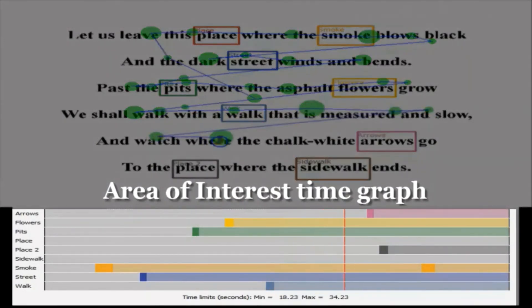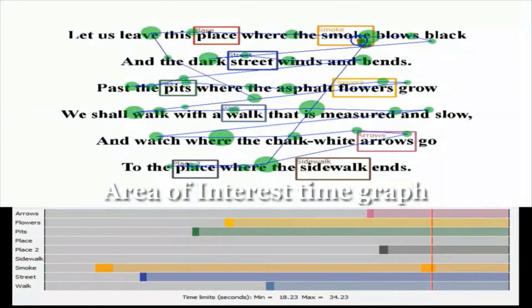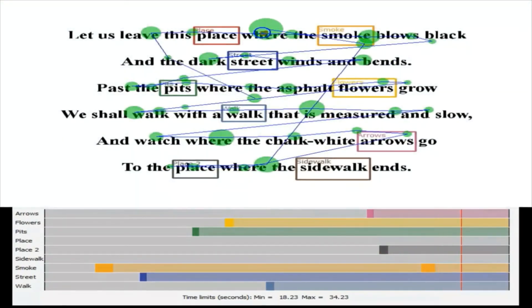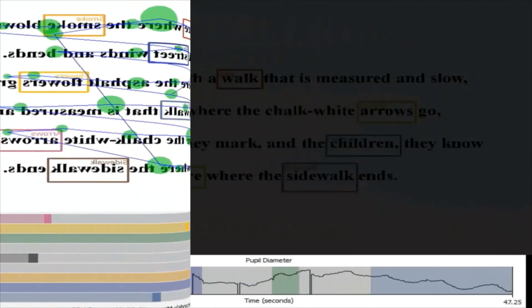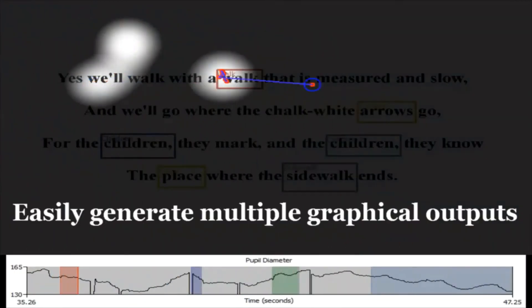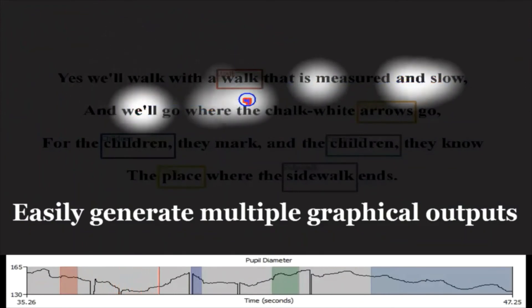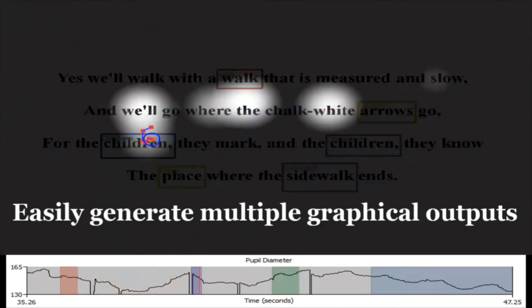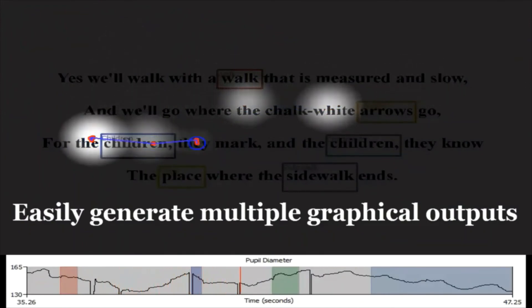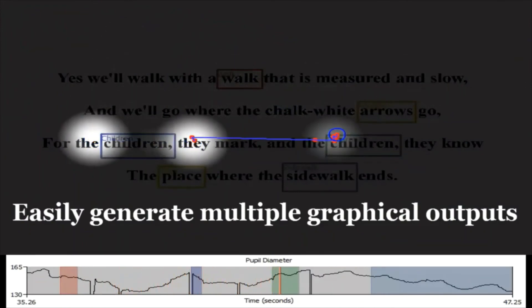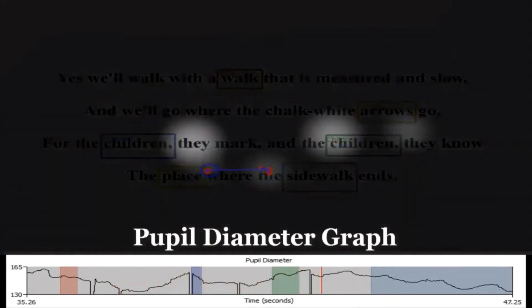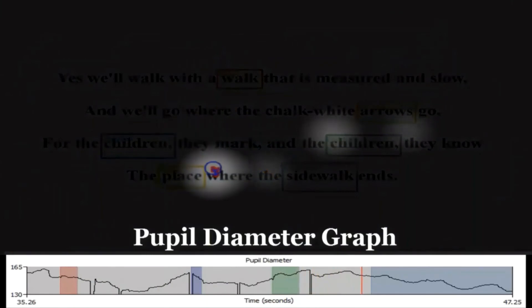Once the AOIs are created, we can easily apply each participant's gaze to the AOI-configured stimulus with just a few mouse clicks. You can then visualize this data as gaze trails, heat maps, fixation sequences, and even peak maps.